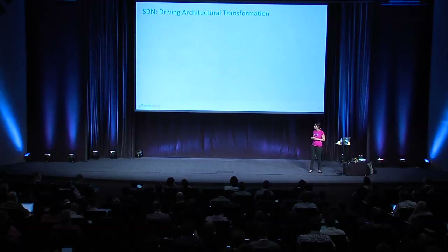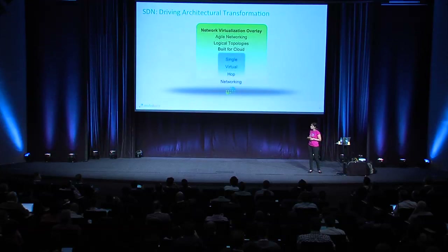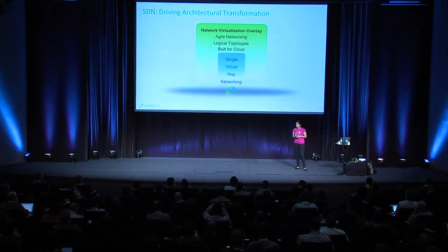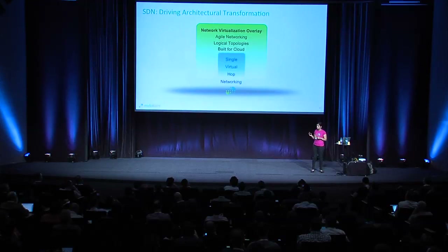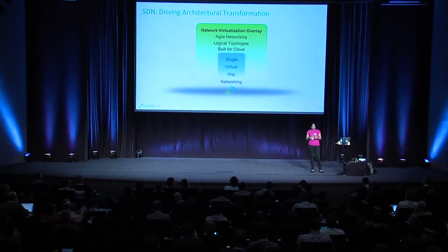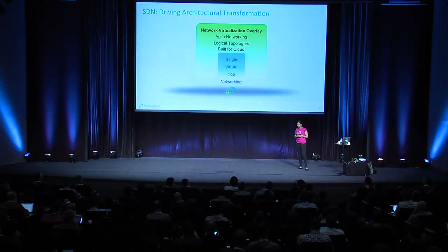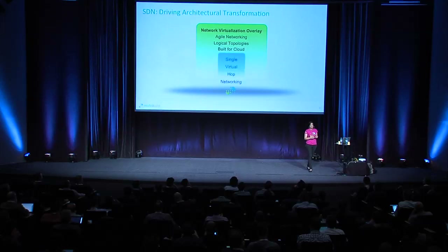We build a network virtualization overlay and get much more agile networking. We can build larger clouds, build logical topologies, and be prepared for a virtualized environment — doing this in what we call a single virtual network hop. We can apply all those network functions previously implemented through hardware or virtualized appliances, but now do it in a single virtual hop and implement this through a logical topology.